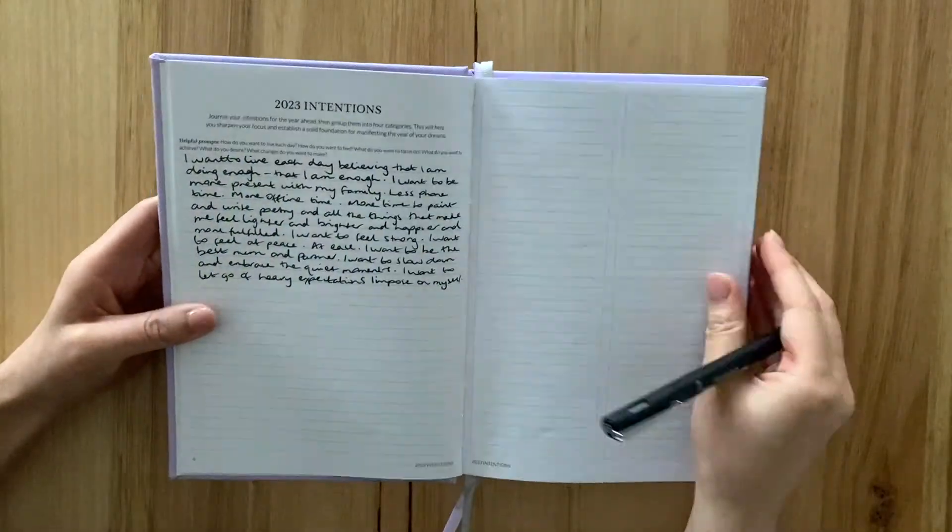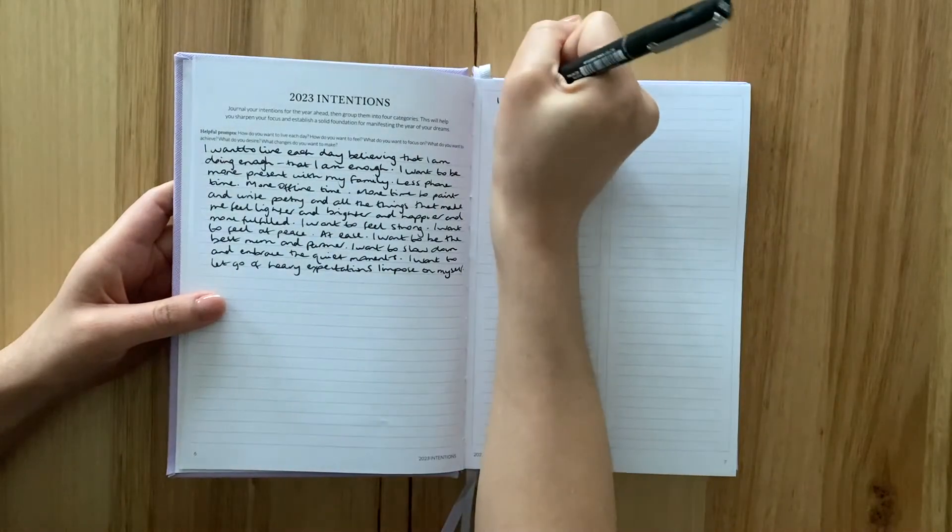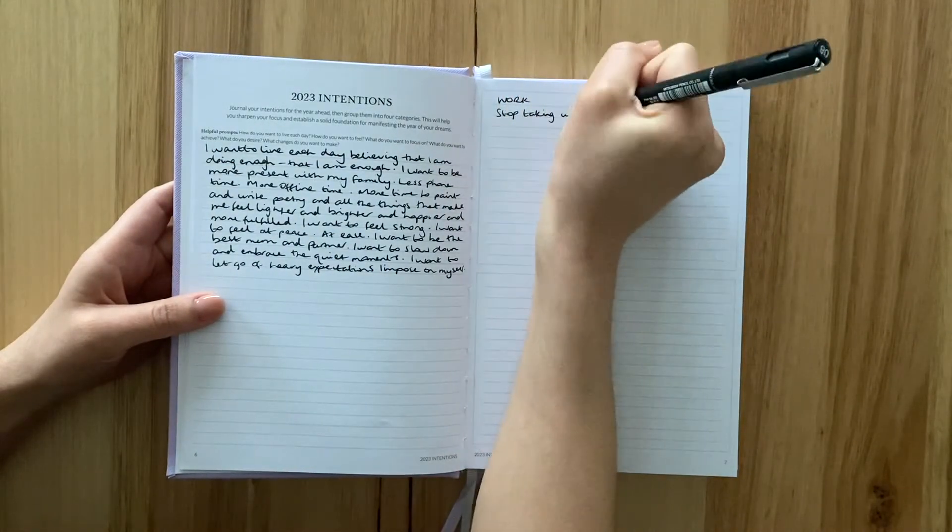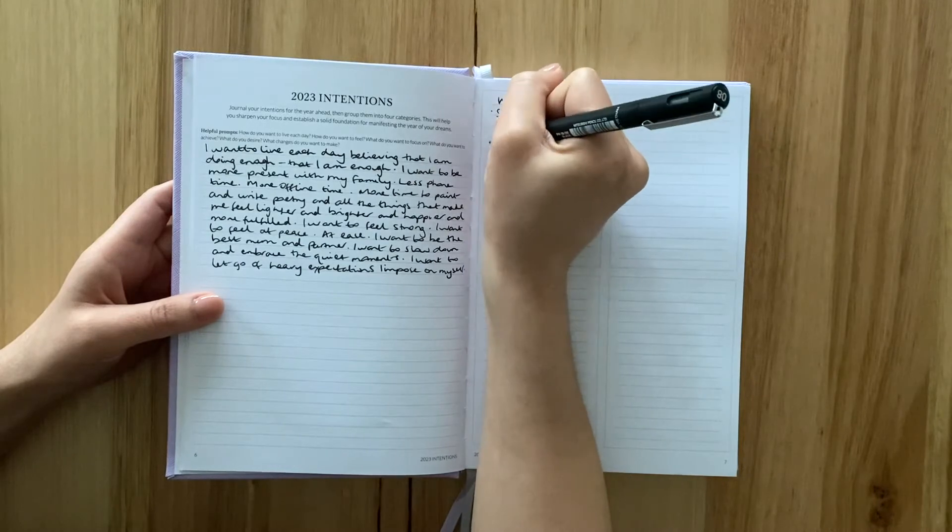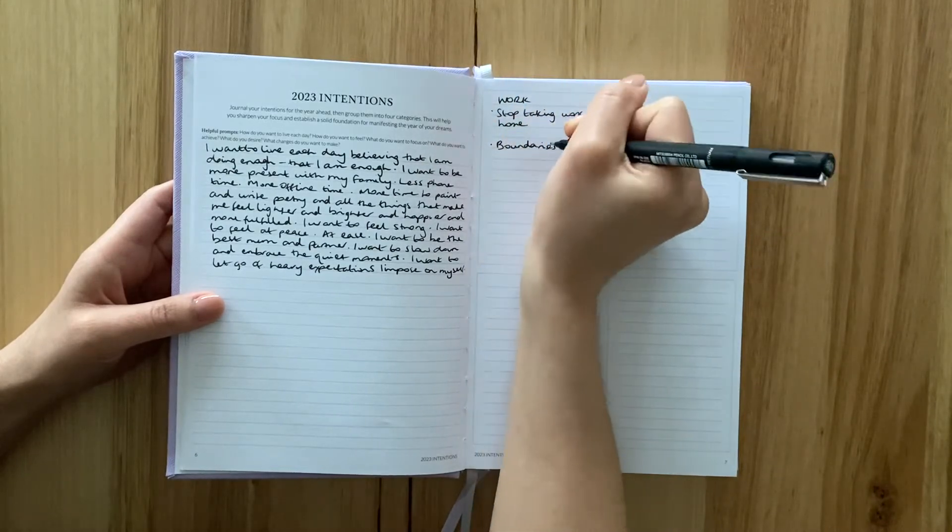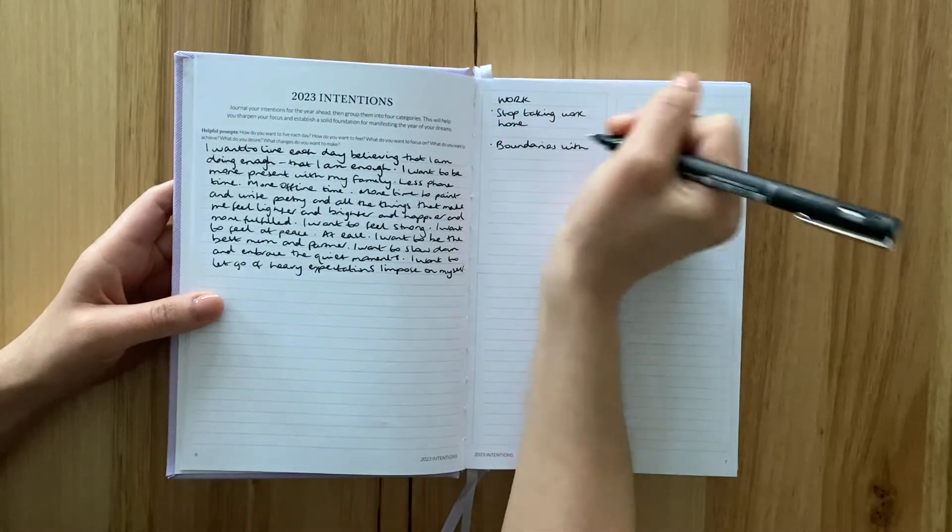When you flip back to this section, you won't need to read over your scribbled thoughts. You can cast your eyes over these four boxes that clearly state your intentions and the areas you want to focus on in the coming year.